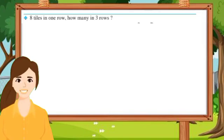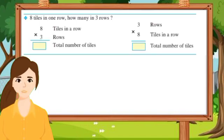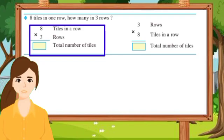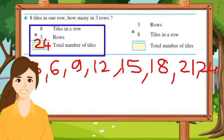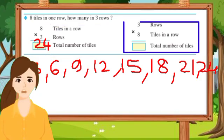Next example. 8 tiles in 1 row, how many in 3 rows? Let's do multiplication. 8 tiles in a row multiply by 3 rows. Total number of tiles are 24. 8 multiply by 3 is equal to 24. In a second method, we can change the order of numbers: 3 rows multiply by 8 tiles in a row. 3 multiply by 8 is equal to 24. Total number of tiles.